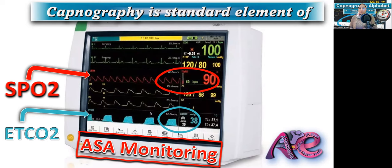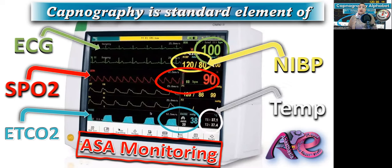The five standard elements of ASA monitoring are: capnography, ECG, non-invasive blood pressure, anesthesia gas monitoring, and temperature. By monitoring our patient with these five standard elements, we eliminate at least 93% of anesthesia mishaps — no longer needing to check pulse manually or look at the color of the patient's lips to detect cyanosis. These five standards are mandatory.